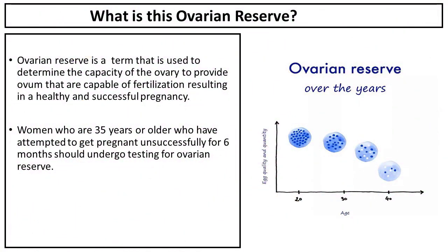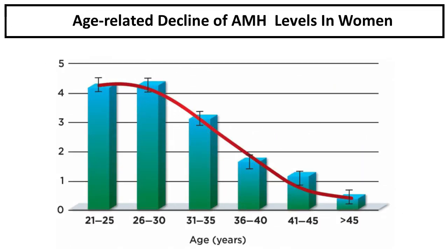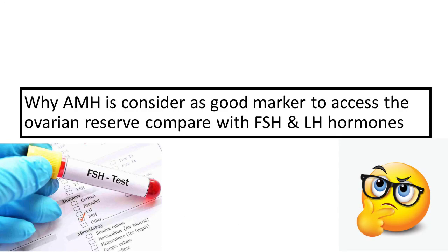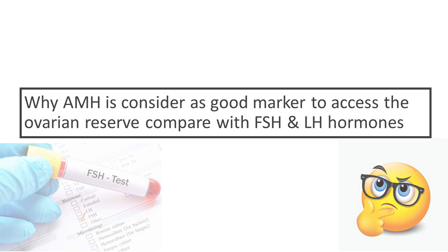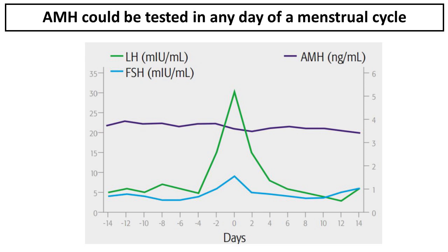Women who are 35 years or older and have attempted to get pregnant unsuccessfully for six months should undergo testing for ovarian reserve. This image shows the age-related decline of AMH levels in women. AMH is considered a good marker to assess ovarian reserve compared with other reproductive hormones, and you can have an AMH test at any point during your menstrual cycle.